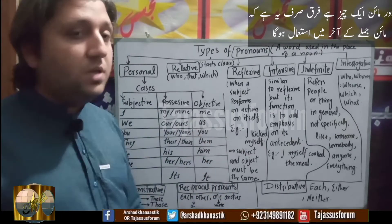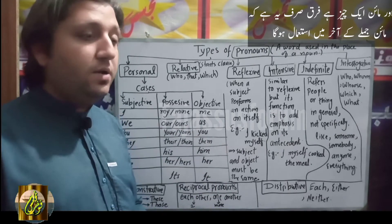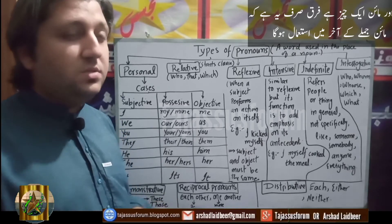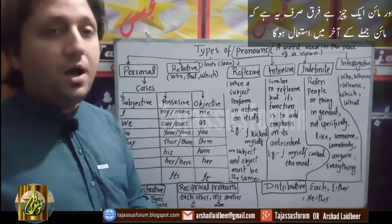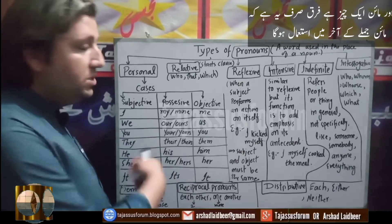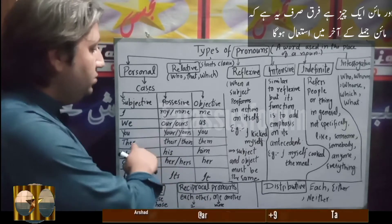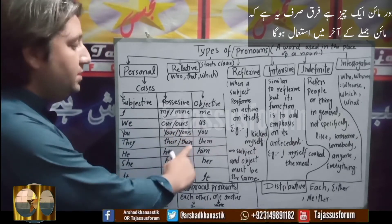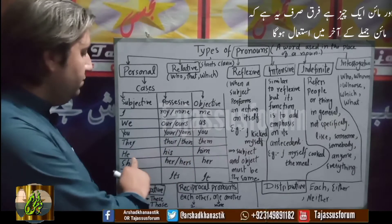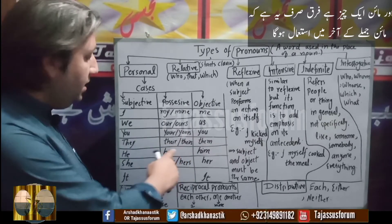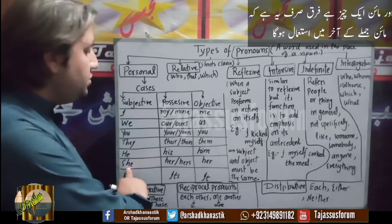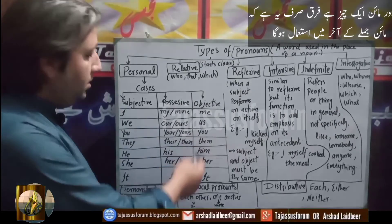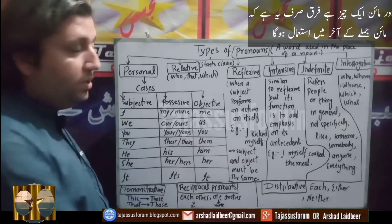For example, 'this is our house' can also be spoken as 'this house is ours'. So similarly, for 'you' there is 'your' and 'yours'. For 'they', there is 'their' and 'theirs'. For 'he', there is only 'his'. For 'she', there is 'her' and 'hers'. For 'it', there is 'its'.